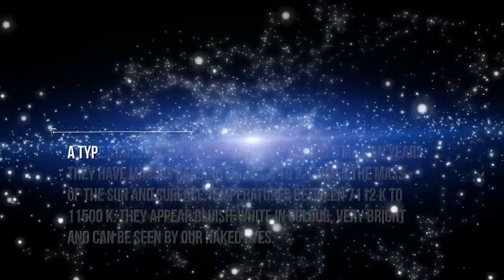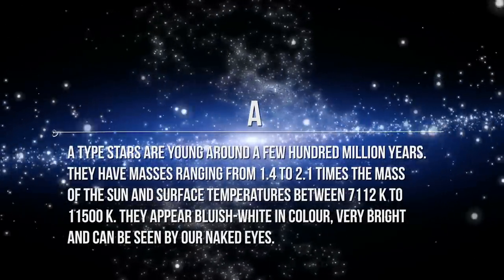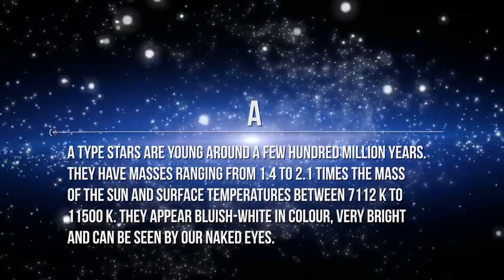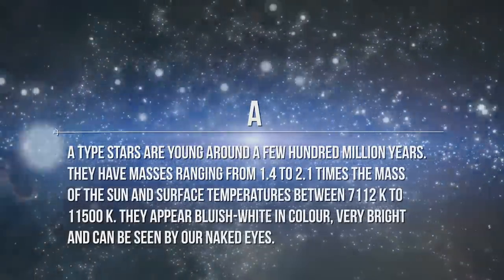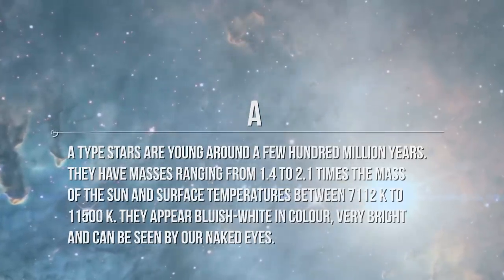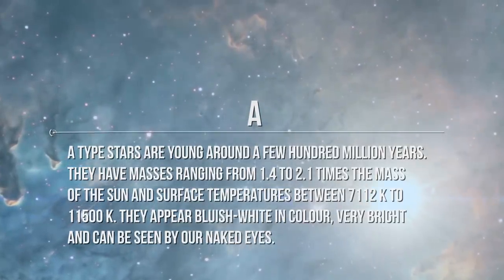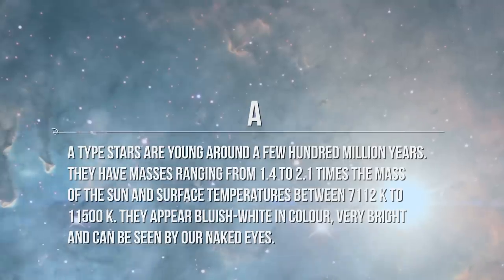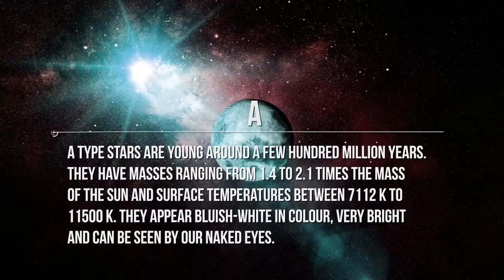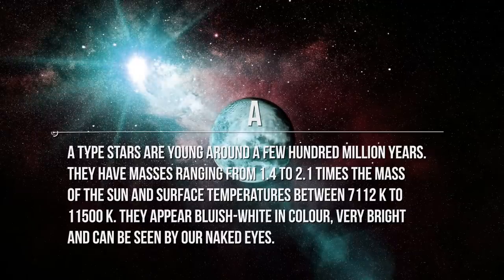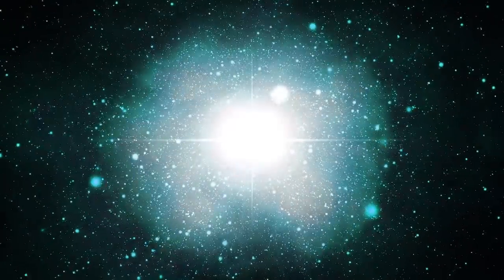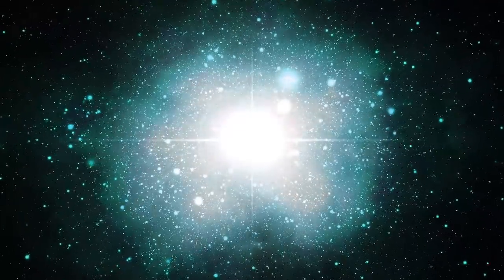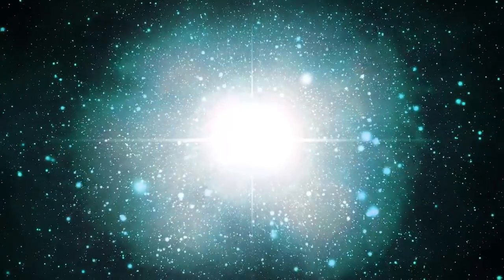Next comes letter A. A-type stars are young, around a few hundred million years. They have masses ranging from 1.4 to 2.1 times the mass of the Sun and surface temperatures between 7,112 Kelvin to 11,500 Kelvin. They appear bluish-white in color, very bright, and can be seen by our naked eyes. A-type stars don't have a convective zone or convective region, a region where a layer of star is unstable to convection and, as a result, they lack strong stellar winds and are not able to bear magnetic dynamo.